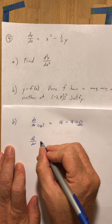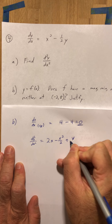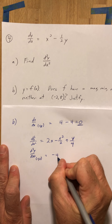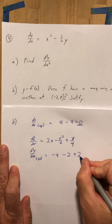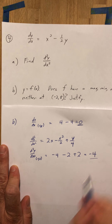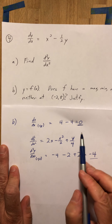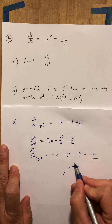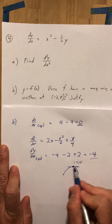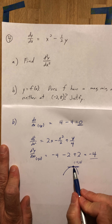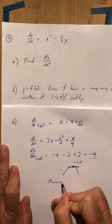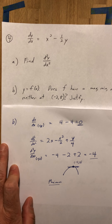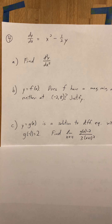The second derivative at the point negative 2, 8 is going to be negative 4 minus 4 halves, which is 2, plus 8 fourths, which is 2, and I end up with negative 4. I have a second derivative that's negative and a first derivative that's 0 — that means a graph that's flat and concave down. That makes it a maximum. The justification is that at negative 2, 8 the first derivative is 0 and the second derivative is negative.